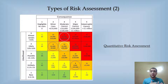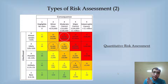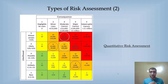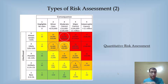On the left side we have likelihood and on the top side we have consequence, that is impact. For example, taking a likelihood value of five — almost certain — and consequence as three — moderate — you can see there is a range of five thousand to one hundred thousand pounds fine mentioned. If we do not mitigate this risk, we are going to be penalized within this amount. This is how you calculate risk in quantitative terms.